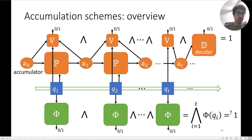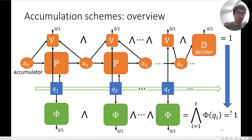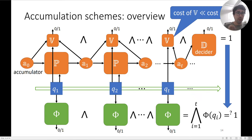This has the property that if all the verification checks passed and the decider accepted, then this implies that the conjunction of φ over all inputs is one. We save work if the cost of the verification algorithm V is much smaller than the cost of the predicate φ.